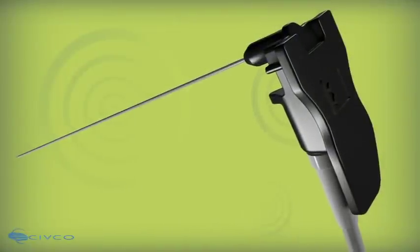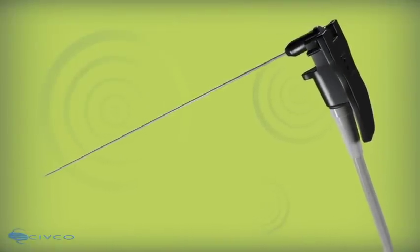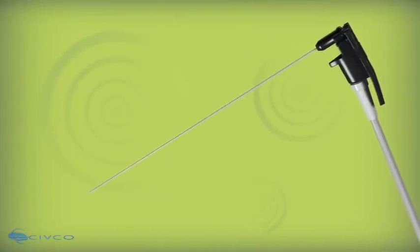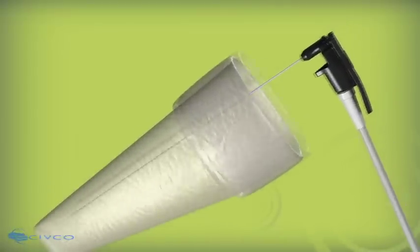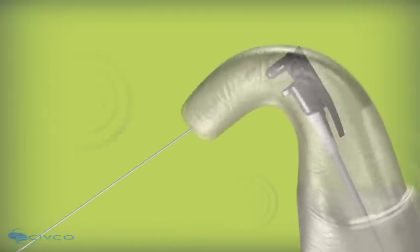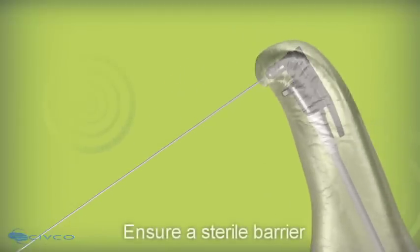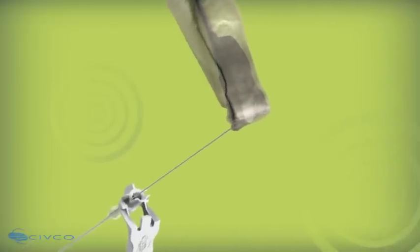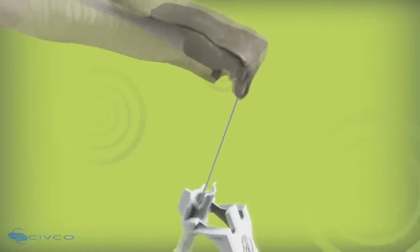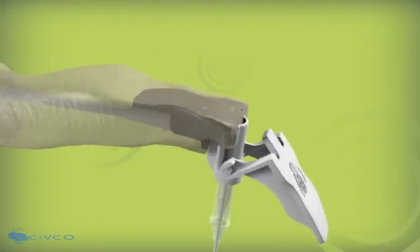Civco's proprietary E-Trax needle guidance system features a protective disposable cover to ensure sterility. Using sterile technique to assemble the E-Trax needle system, cover the non-sterile E-Trax needle sensor with a CivFlex sensor cover to ensure a sterile barrier. Then slide the sterile disposable needle sheath over the E-Trax needle sensor assembly and snap into place with a single click.